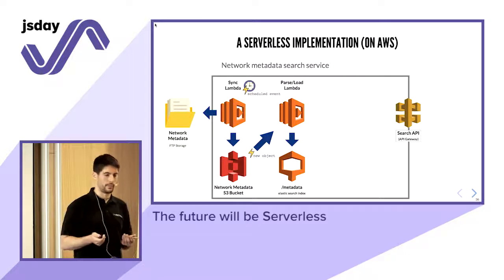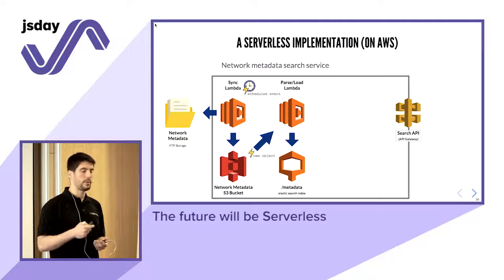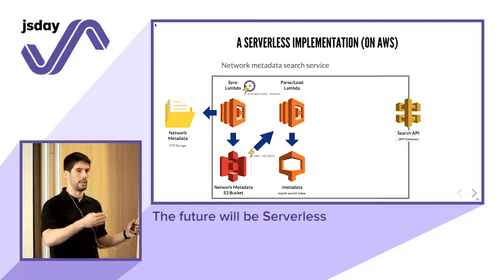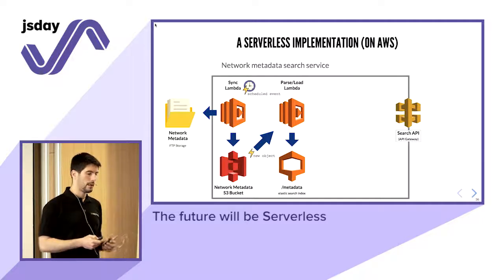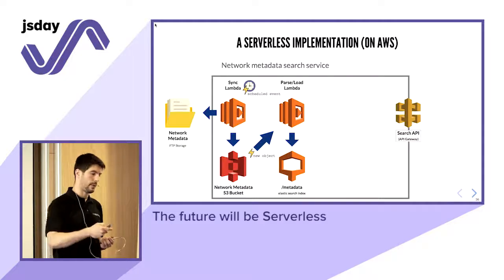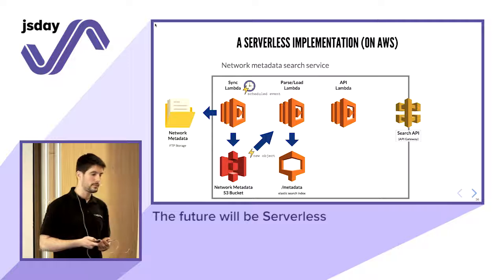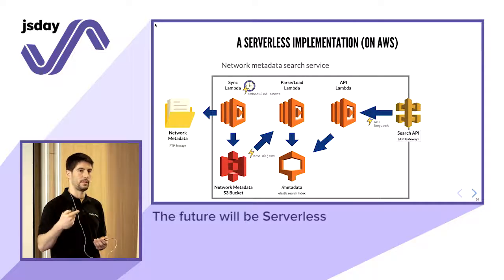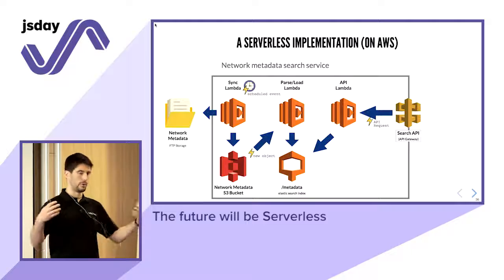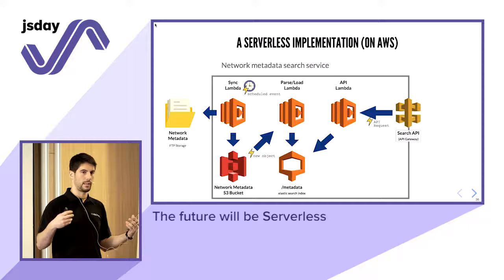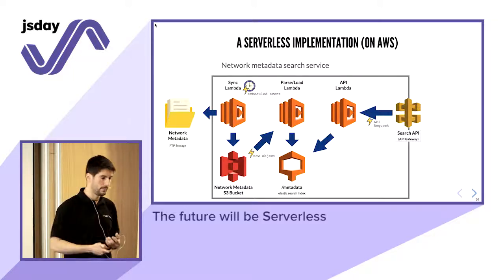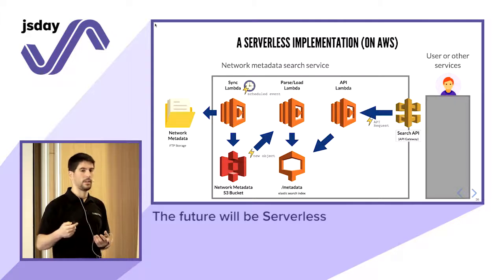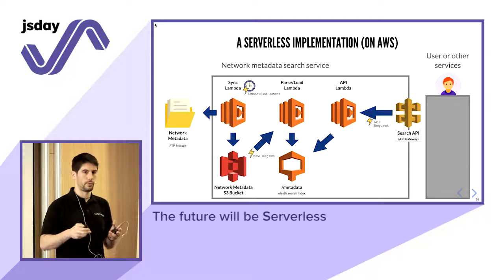At this point we've built something that runs in the background and constantly keeps Elasticsearch up to date. But how do we actually consume this data? We write another Lambda accessible via API Gateway that queries Elasticsearch whenever there's an API request on a specific endpoint. Now there are two flows: one side keeps Elasticsearch always up to date; the other side responds to search requests through the new Lambda. Anyone — a user or another service — can use those APIs, exposing a new feature through an HTTP API.